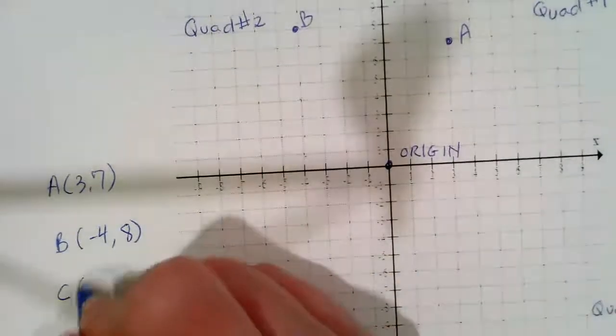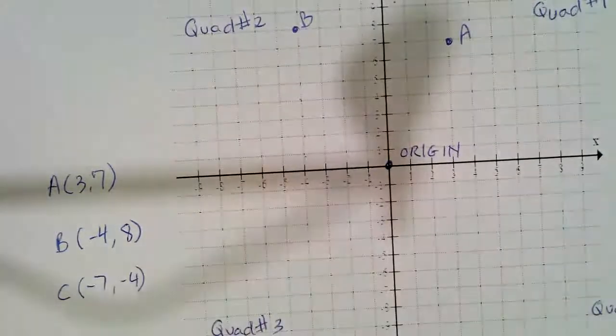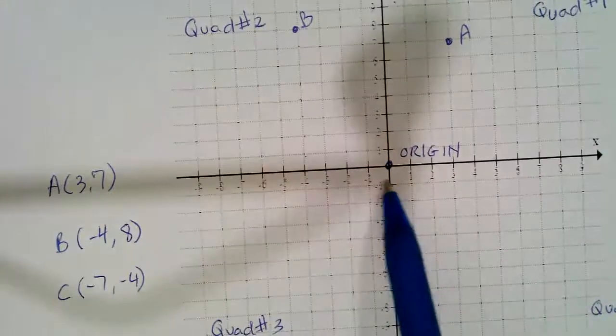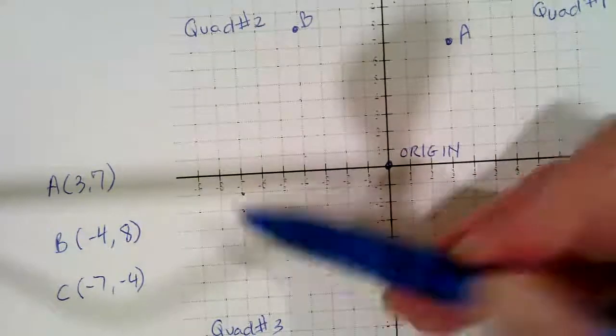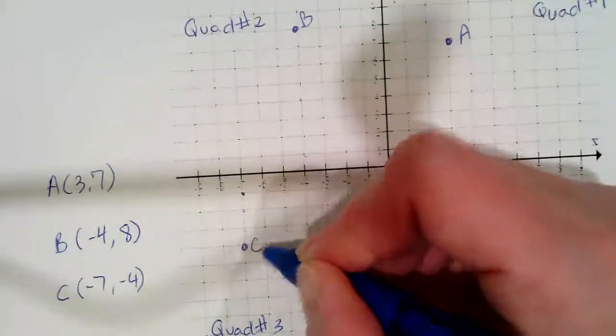And C is going to have the coordinates (-7, -4). So we're going to go, the X coordinate is -7. And then we're going to count down four. One, two, three, four. There's C.